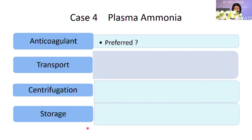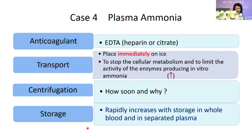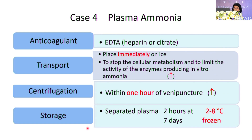The anticoagulant for ammonia is also EDTA. It should be immediately placed on ice because it differs from homocysteine — even after separating plasma, other enzymes in the body can convert substances to ammonia. Ideally, it should be analyzed the same day, within 15 to 30 minutes. If a sample arrives from far away showing 200–300, the clinician doubts whether it is a rare disease — but this is almost always due to pre-analytical errors from improper specimen collection and transport.